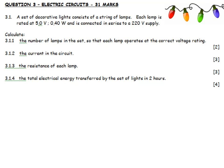A set of decorative lights consists of a string of lamps. Each lamp is rated 5 volts and 0.4 watts, and is connected in series to a 220 volt supply. We know in series that the energy used by each lamp adds up. To find the number of lamps in the set so that each lamp operates at the correct voltage, I take 220 and divide it by 5, and land up with 44 lamps.